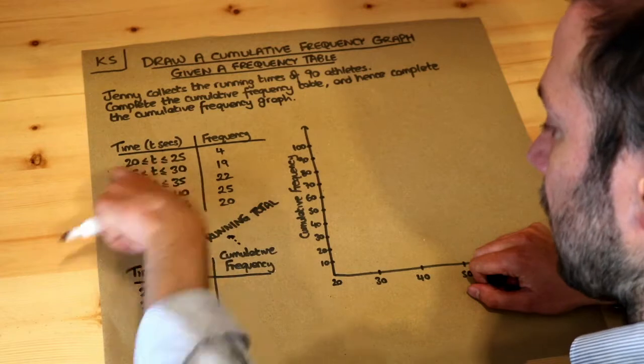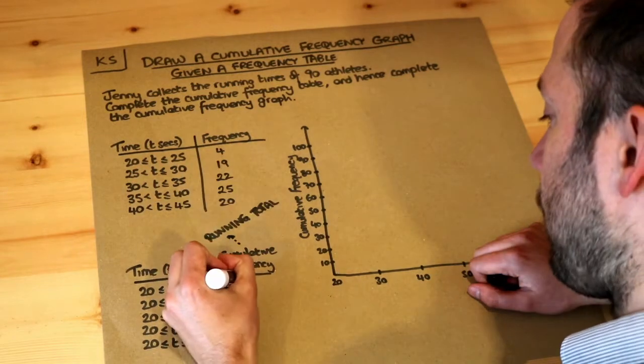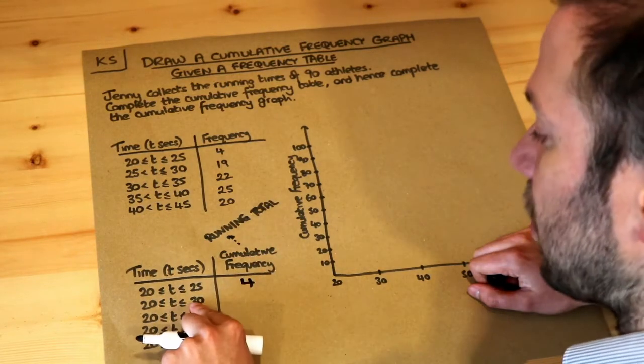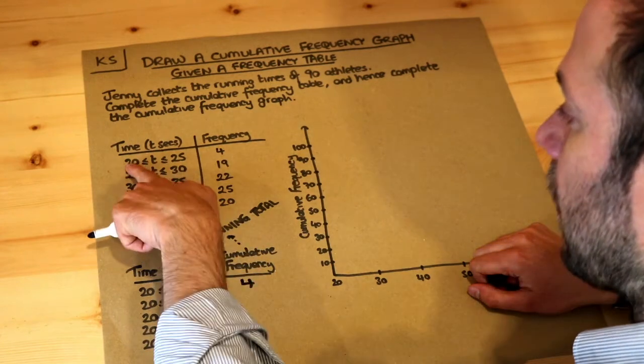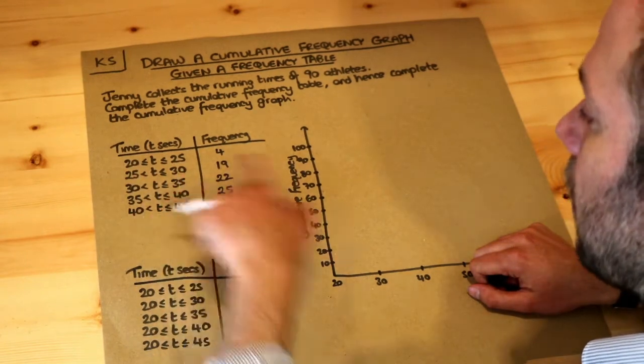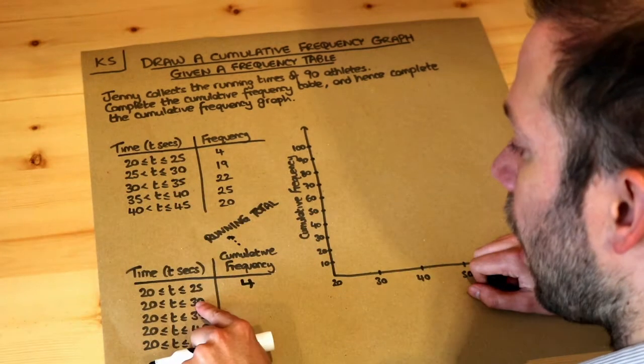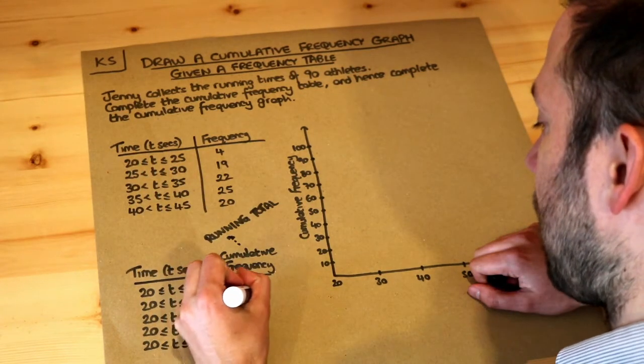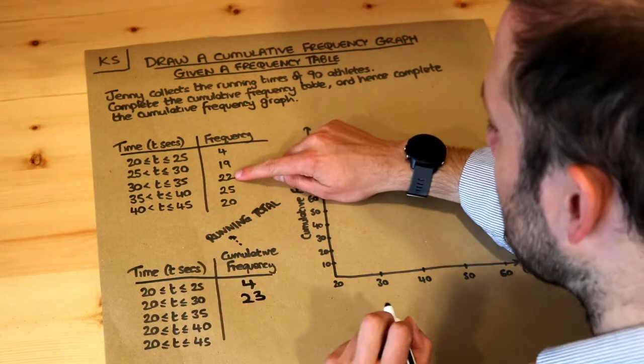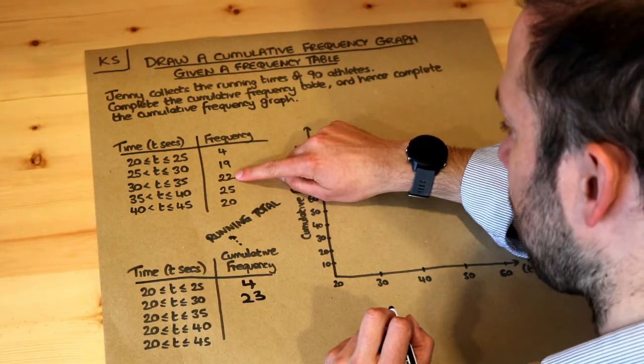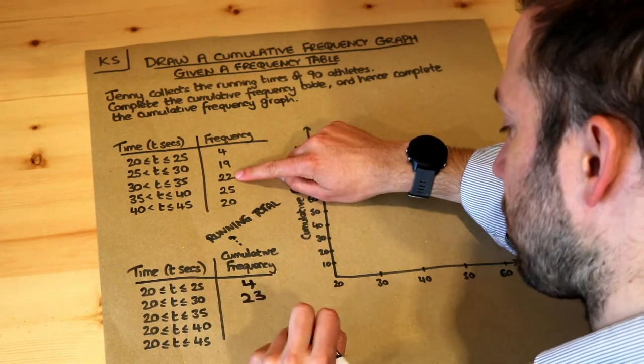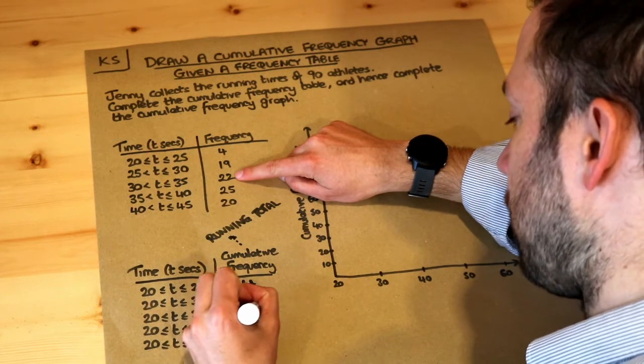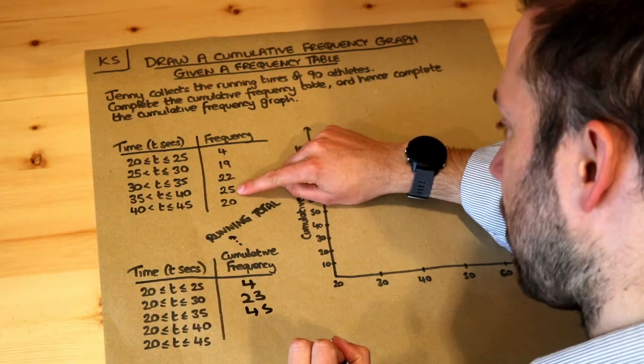So look this is the same as that we can just copy the four and then up to 30 that's everyone in the 20 to 25 group and the 25 to 30 group, it's everyone up to 30 seconds from the starting value of 20 so we've got 23 people in total. And then we just get the running total so we've got another 22 athletes so 23 plus 22 is 45 and then we've got another 25 athletes.